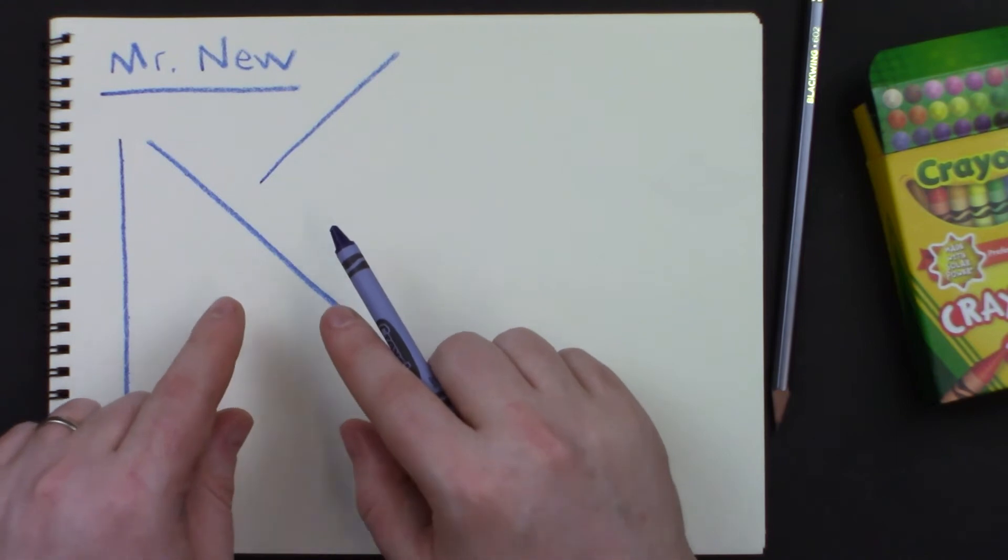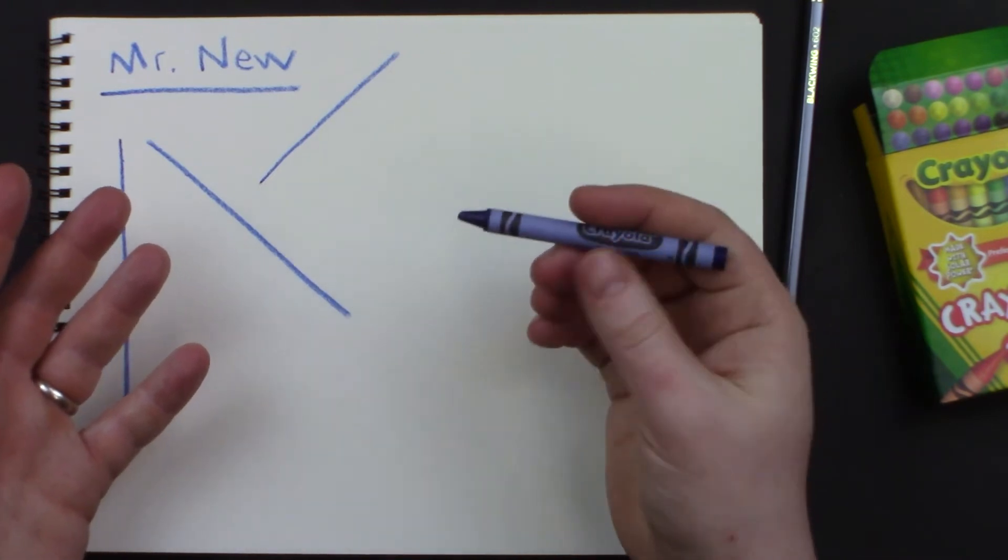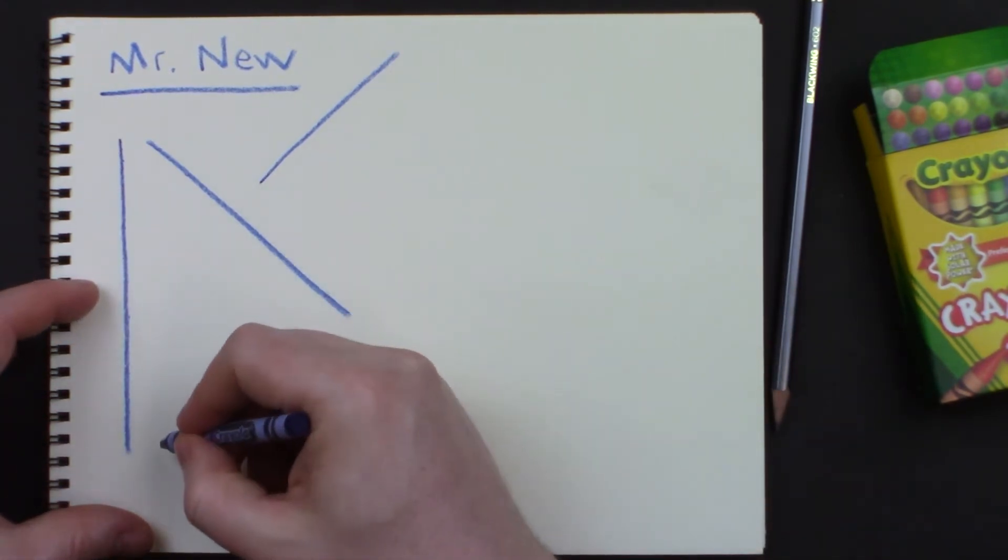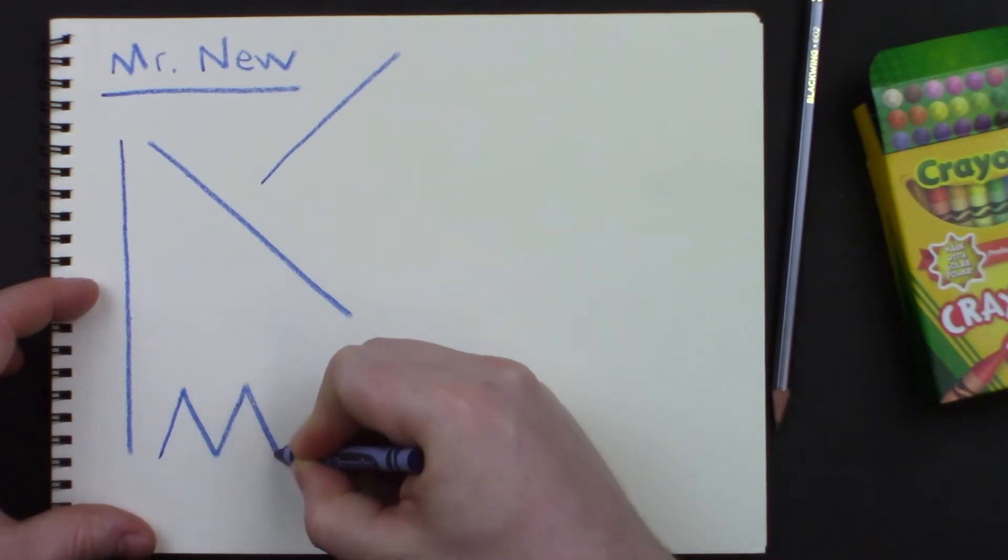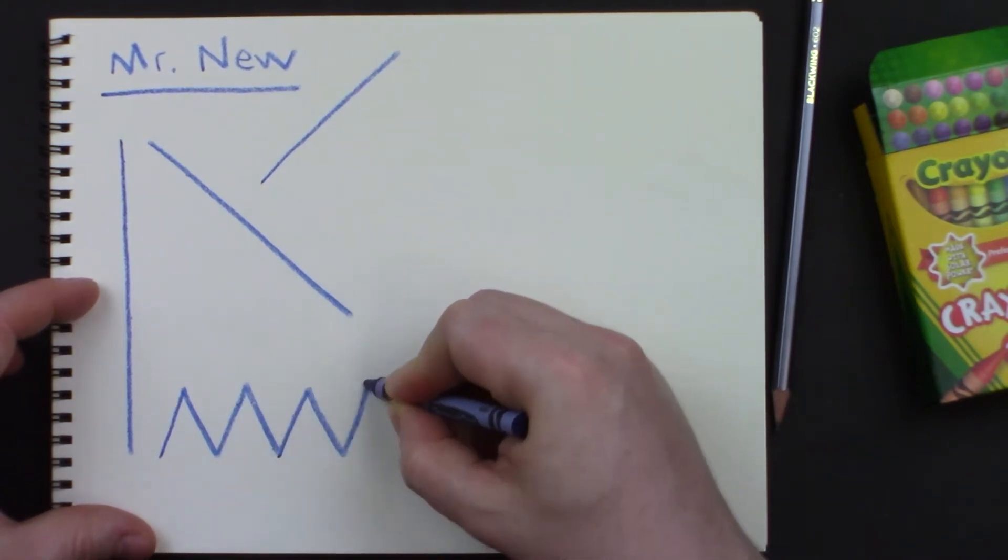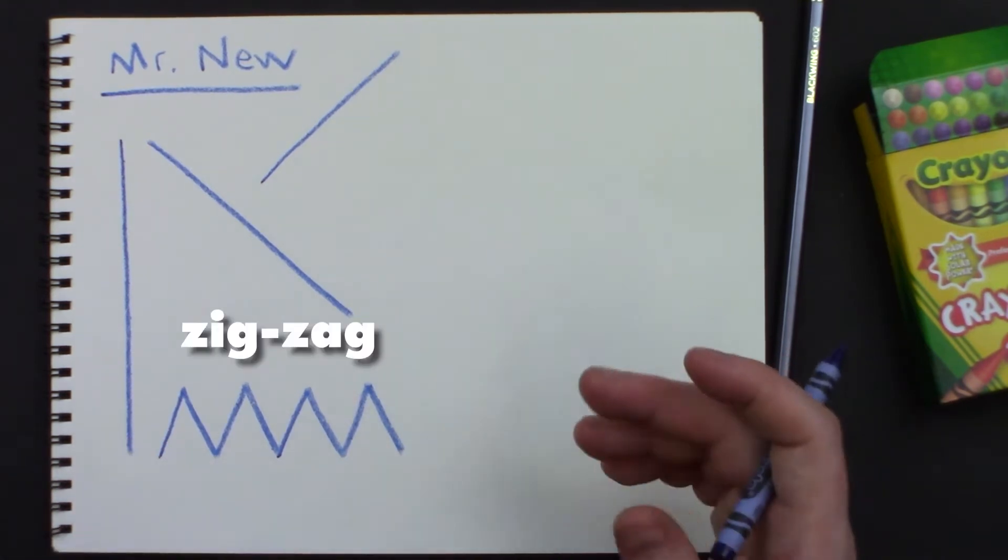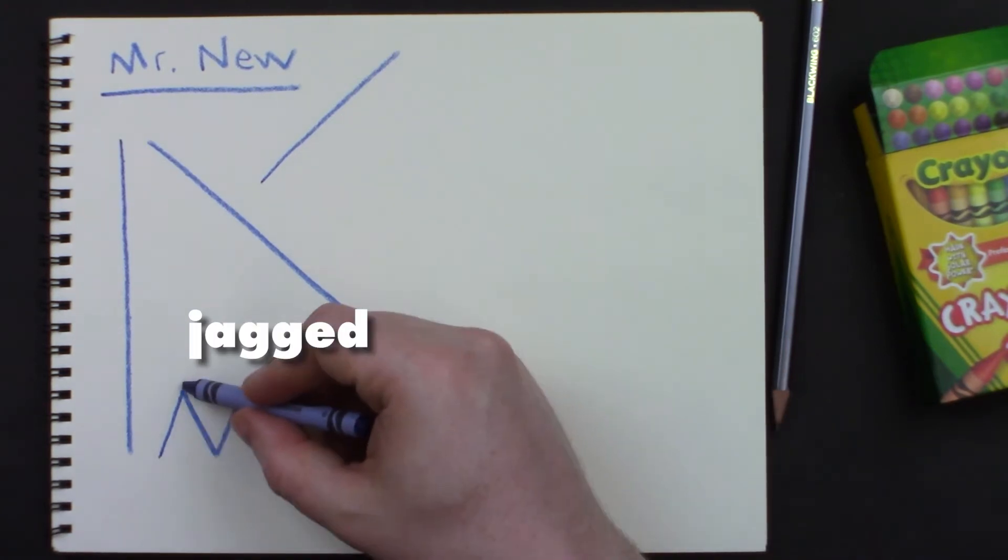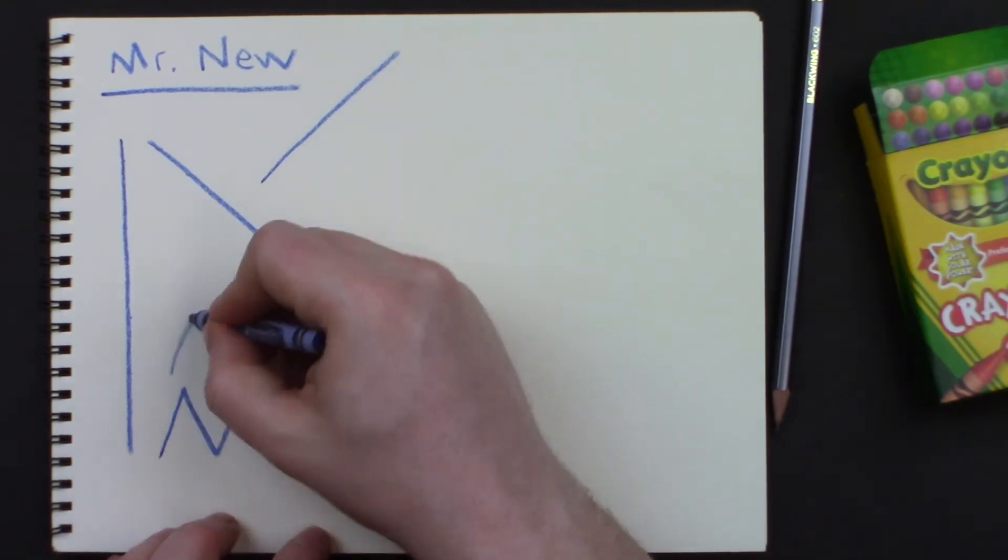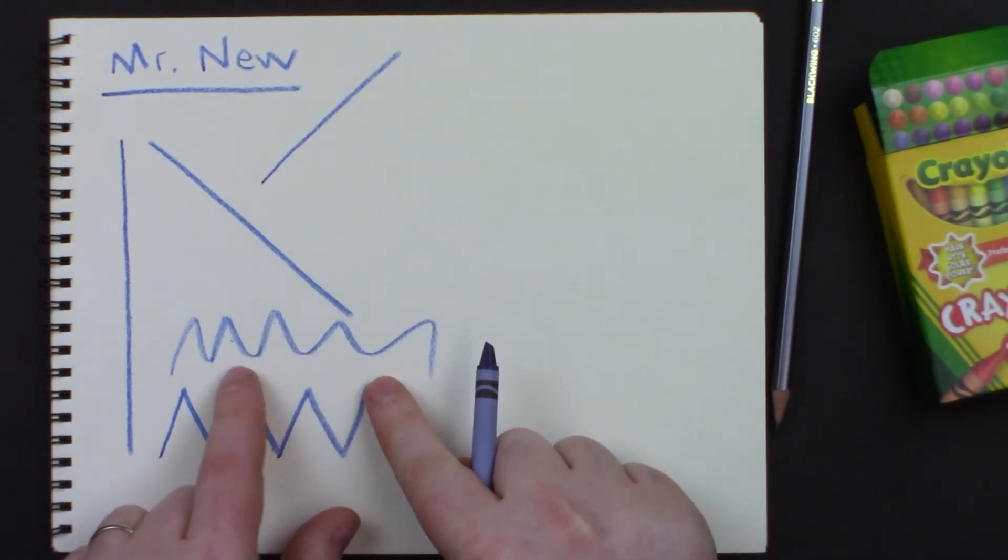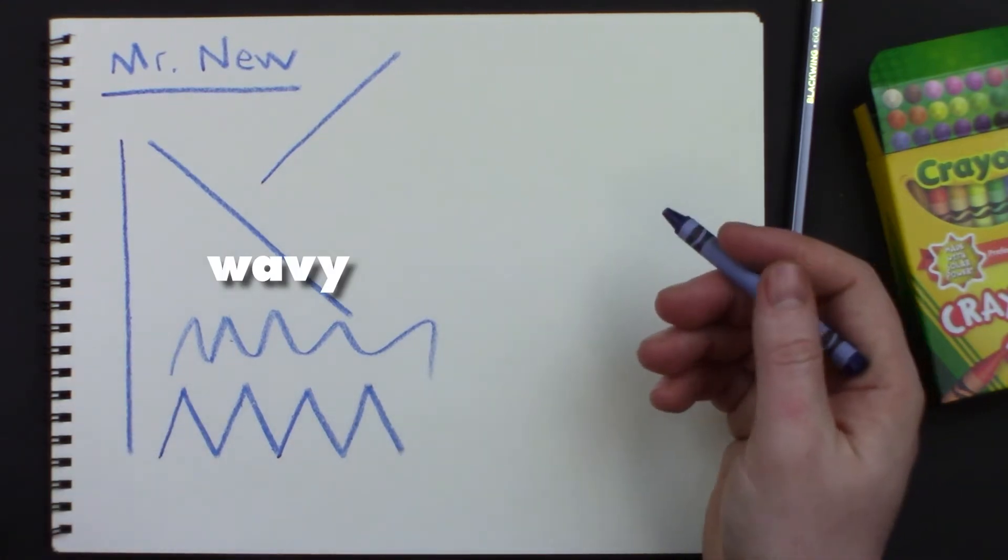But do lines have to be straight or could there be other kinds of lines? For example, could I make a line that goes up and then down and then up and then down and then up and then down? Does this line have a name? We call this a zigzag line or some people call it jagged because it has sharp jagged points. How do we make those sharp jagged points? If I make my line super quick, you see how those aren't sharp jagged points? They're sort of round. This is a wavy line. Let's see the difference.